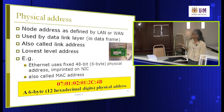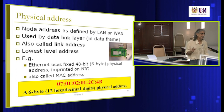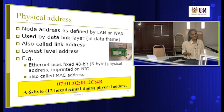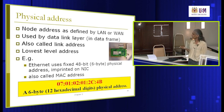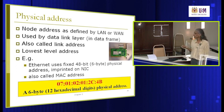Ethernet uses a 48-bit unique MAC address in hexadecimal format. Card manufacturers are licensed to create these addresses, ensuring no duplication. It's also called the link address — the lowest level address available. You can find your MAC address in your network connection settings listed as 'physical address'.